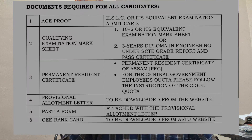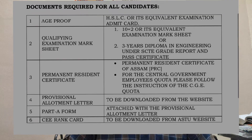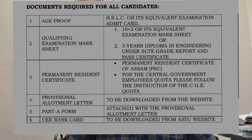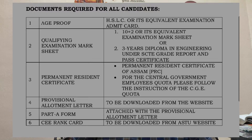Next is the Provisional Allotment Letter. You have to do counseling and you have to obtain the Provisional Allotment Letter as a college branch. You have to print it out as a letter from the website. You have to do the provisional allotment letter and check the branch detail screen.